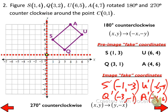Using my new coordinate system, S prime at (-1, -3) goes right there, Q prime at (-3, -1) goes right there, U prime at (-6, -4) goes right there, and A prime at (-4, -6) goes right there. Connect those together and that is the 180-degree counterclockwise rotation.